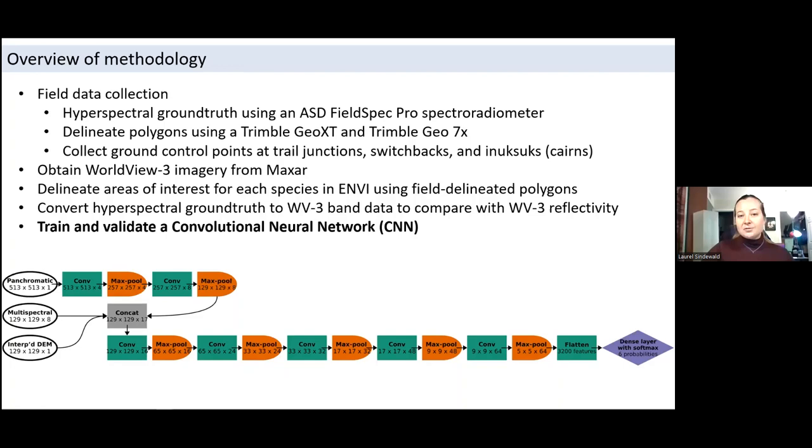We converted our hyperspectral ground truth to equivalent WorldView-3 multispectral bands to compare apples to apples to check whether the data collected for a given individual on the ground compares well to the data collected for that individual by the satellite. This is to ensure that our pixel selection process in the imagery was adequate. We can also use this data to determine whether spatial or spectral resolution is more limiting for this classification problem. I'll present this work at the end of the webinar. Finally, we can use our WorldView-3 reflectance data, labeled by species, to train and validate a convolutional neural network machine learning model. We probably won't have time to go deeply into the structure of this model, but I've included a diagram of the architecture here, and I will do my best to explain it to you simply in upcoming slides.